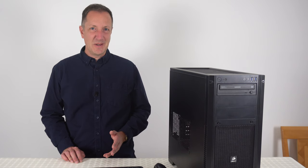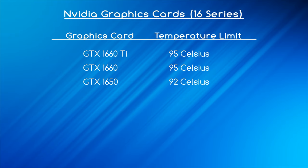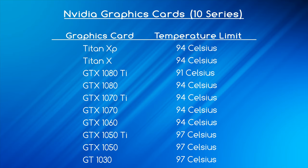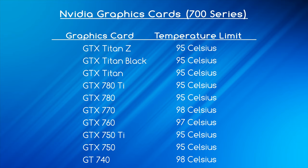Let's look at graphics card temperature limits. These 20-series cards from NVIDIA all have a limit of 88 or 89 degrees Celsius. The 16-series cards have a slightly higher limit. Then there's the 10-series ranging from 91 to 97 Celsius, the 900-series ranging from 91 to 98 Celsius, and the 700-series with limits ranging from 95 to 98°C.